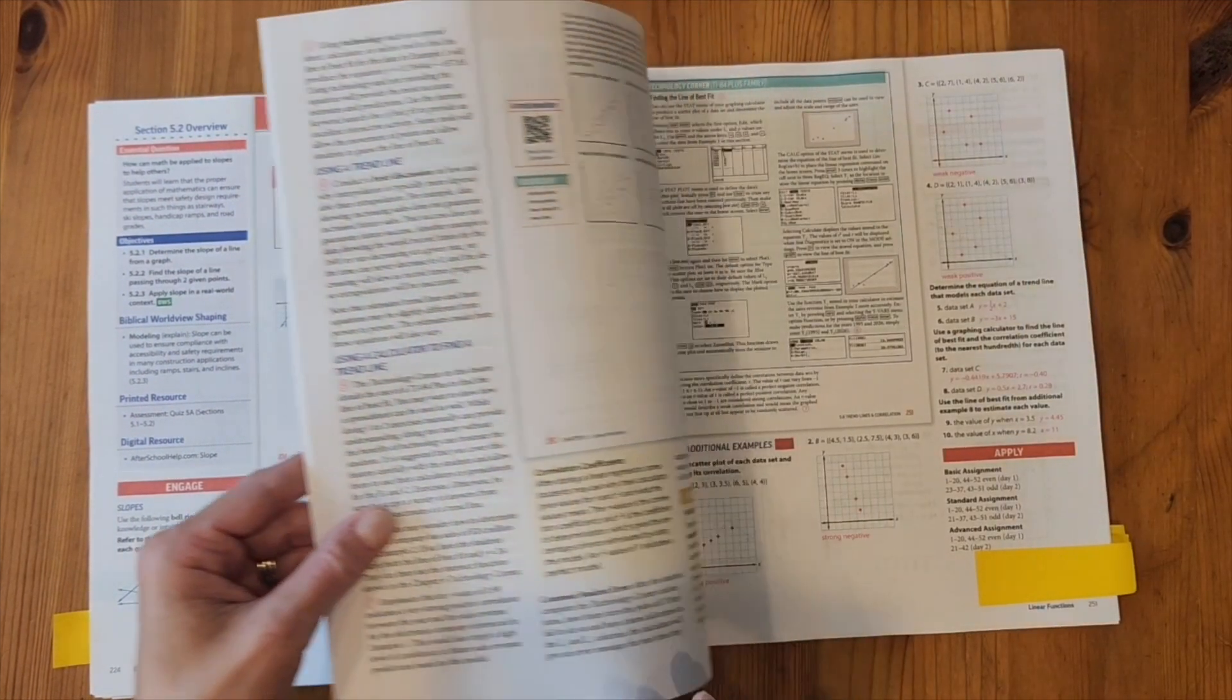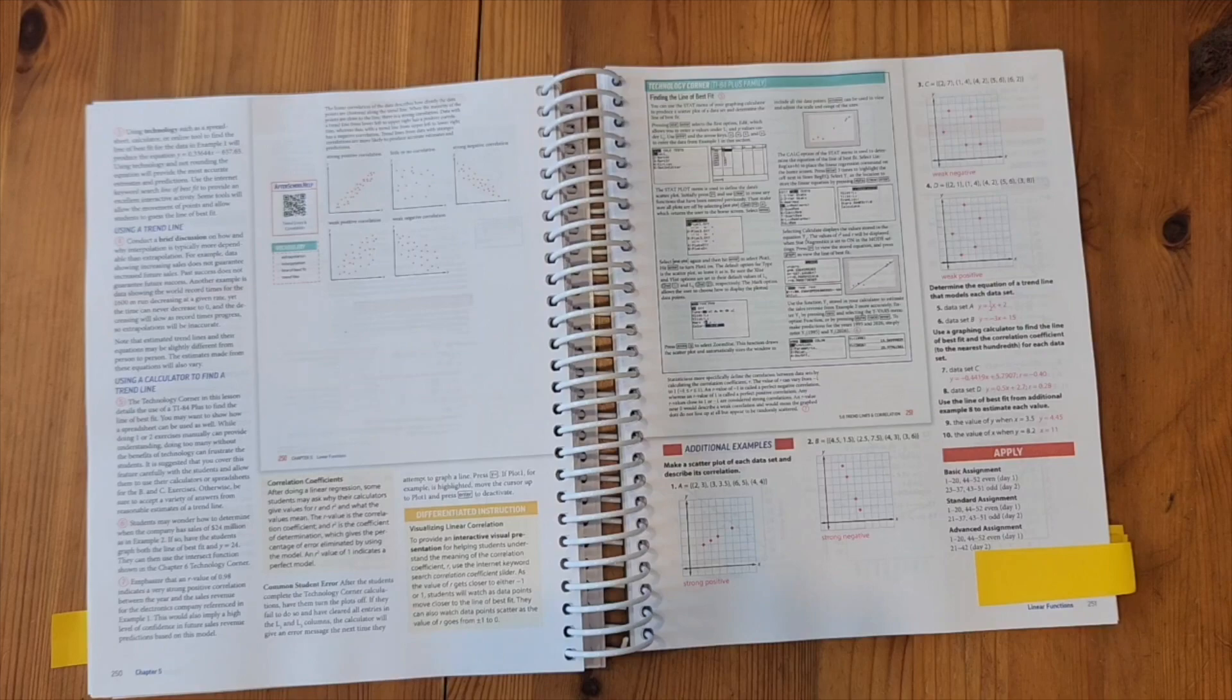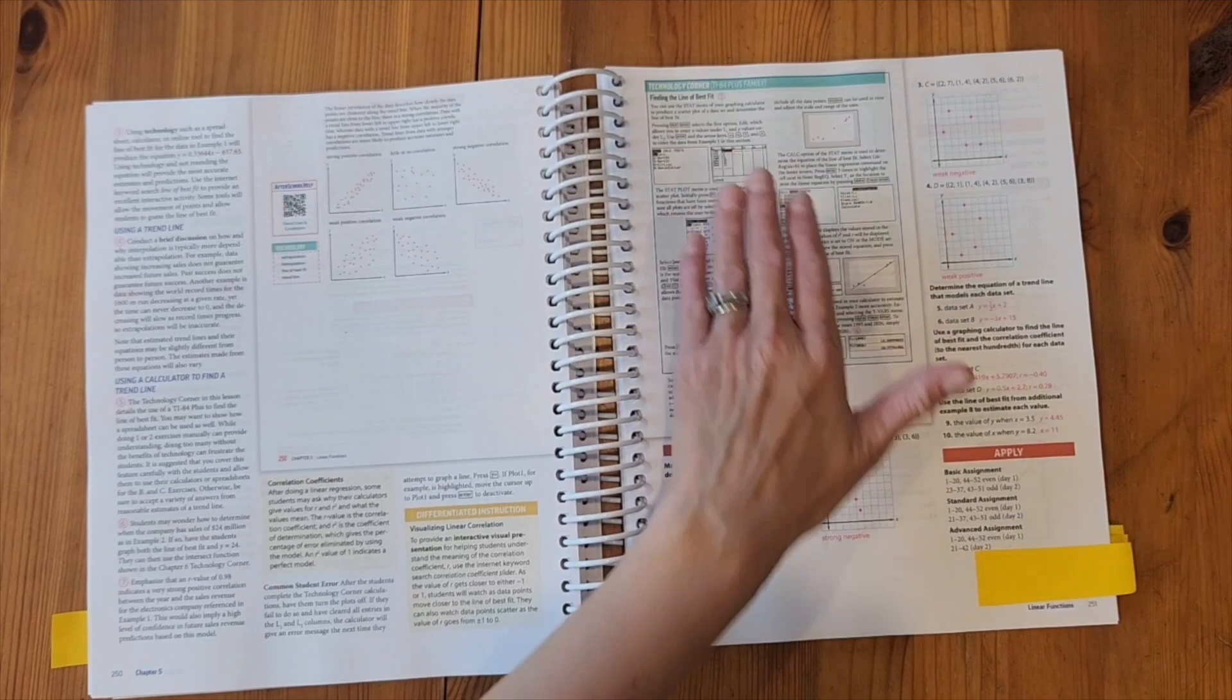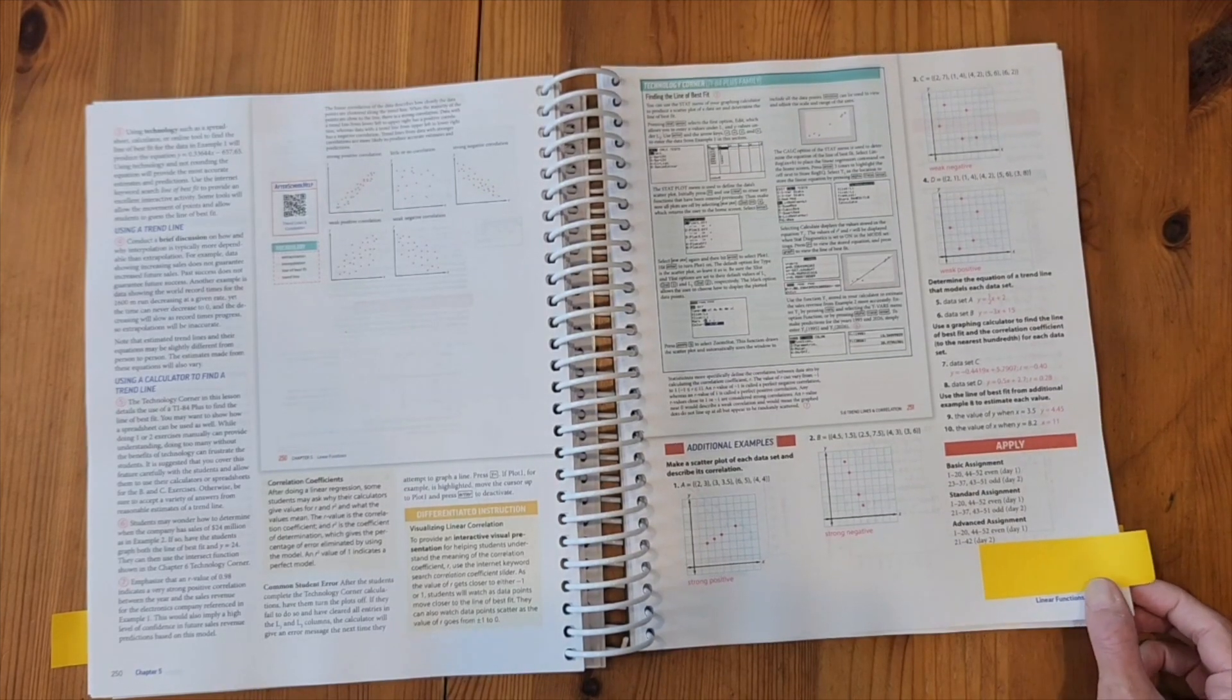Let's jump ahead a bit. Mixed throughout this book, you're going to have technology corners, which is going to help teach your child how to use a graphing calculator. This suggests using a TI-84+, and it could be any calculator from that family. In this one, you would be learning how to find the line of best fit using a linear regression. So these are cool examples of how to use technology within the course.